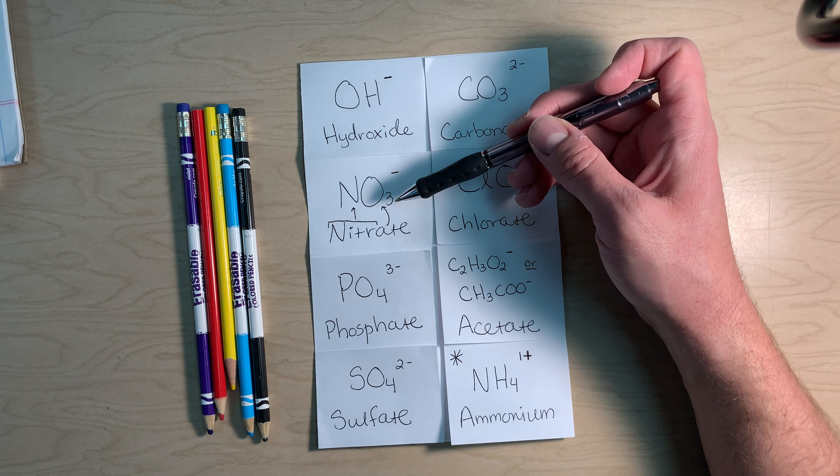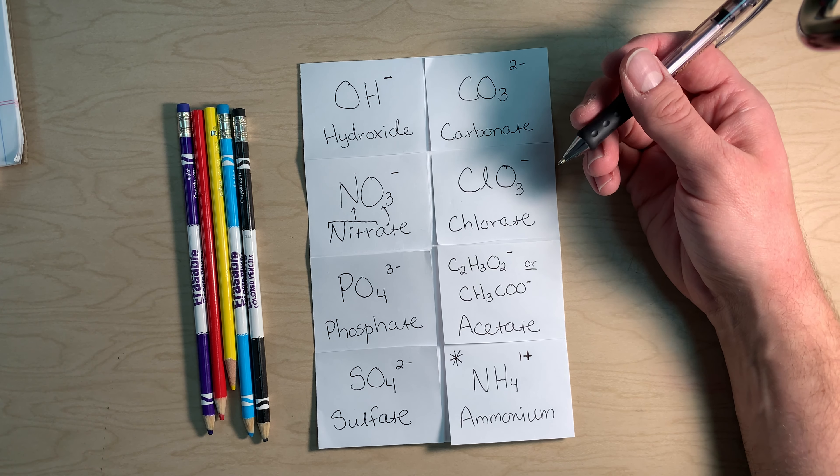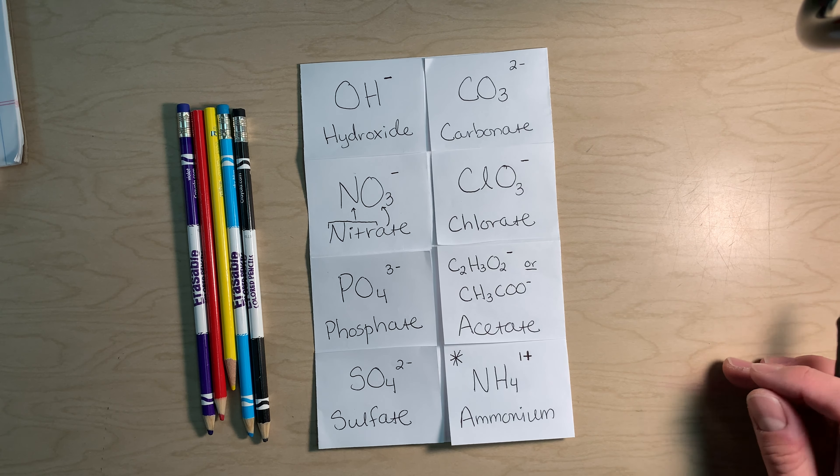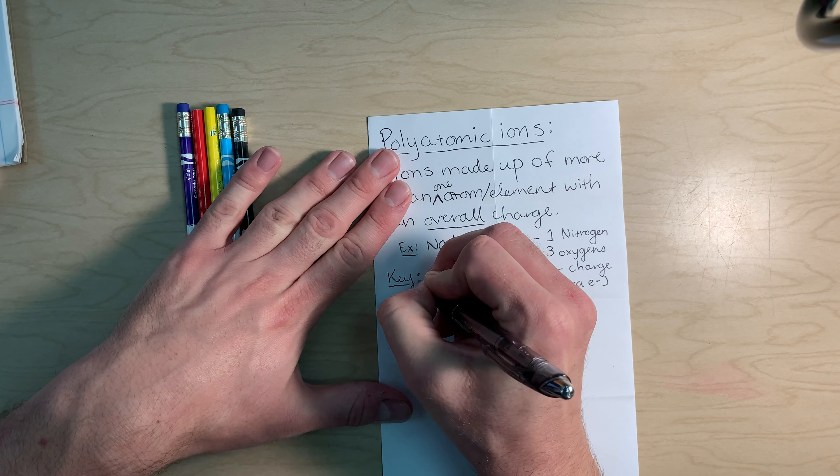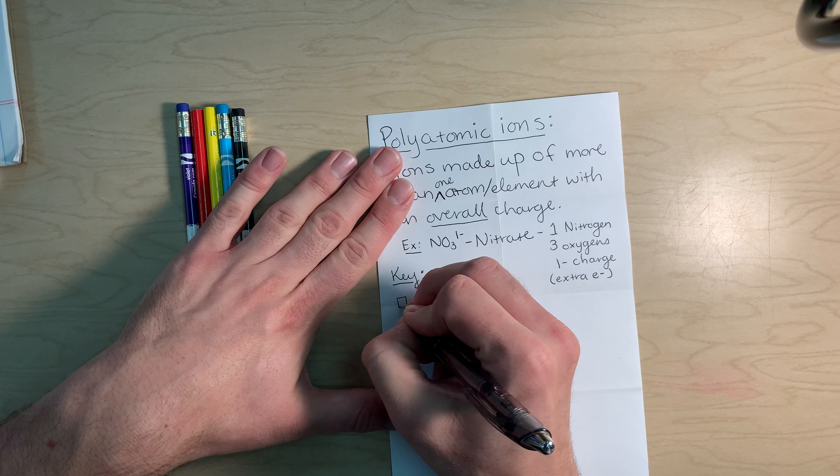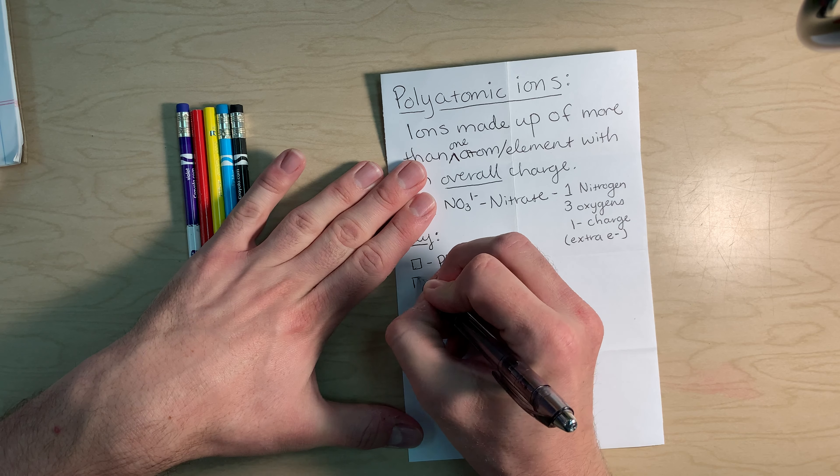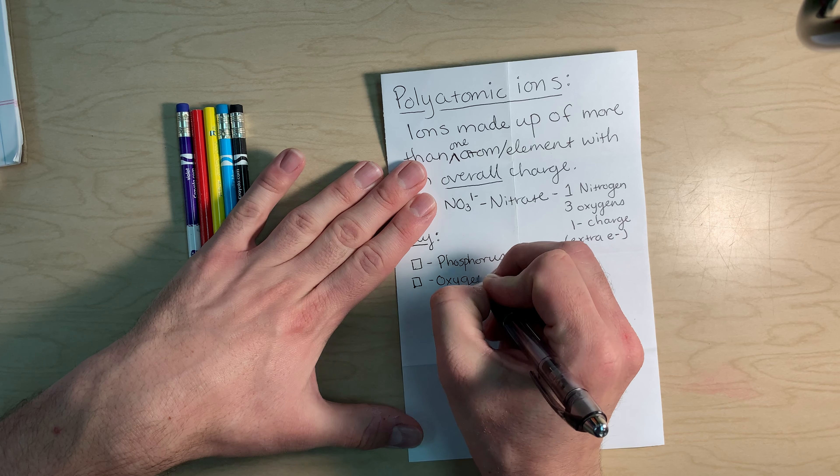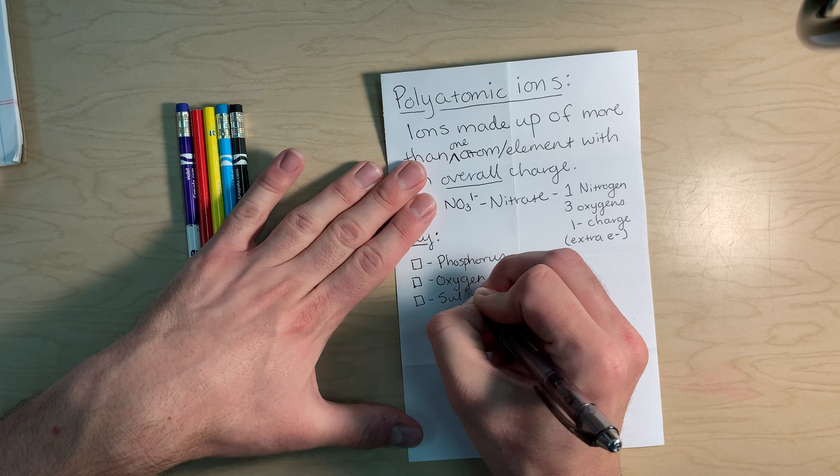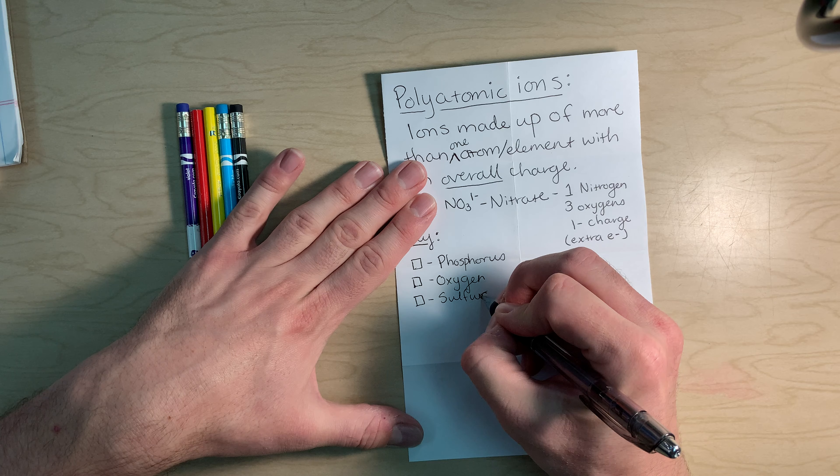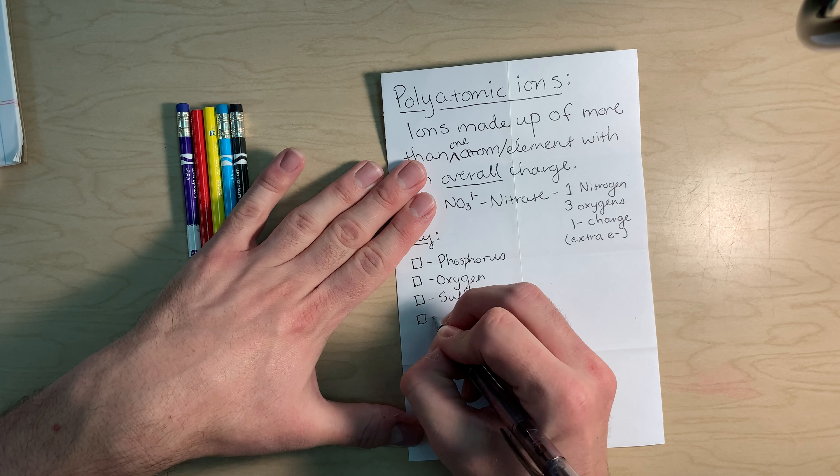Now, these are kind of the top eight. We're going to see on our placemat that these names can change slightly if we change how many oxygens are here. But that's something we just don't quite have time for this year. So let's get started with finishing this. On the back it says ions made up of more than one atom or element with an overall charge. We use the example of nitrate. So we're going to make ourselves a key. I'm going to make a box for phosphorus, a box for oxygen, and then repeat this process with every substance.